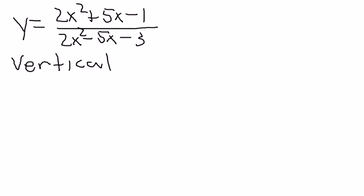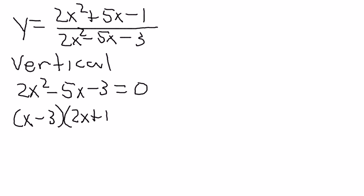On our vertical asymptote, we're going to take the 2x squared minus 5x minus 3, set it equal to zero, and solve it. So you factor that. It's x minus 3 and 2x plus 1.